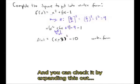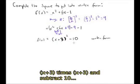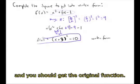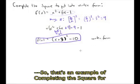And you can check it by expanding this out, taking x plus 3 times x plus 3, subtracting 10, and you'll see that you get the original equation here back. So that is completing the square when a equals 1 on a quadratic function.